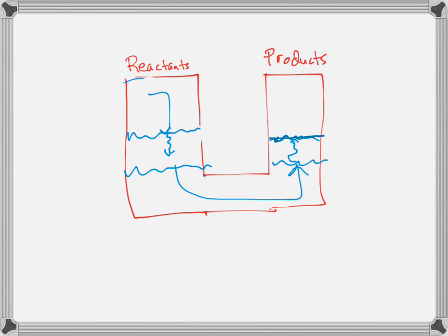What happens if instead of adding reactants, I added more products? I added some stuff to that side. Our water is going to push down a little bit, and this is going to go up — our reactant concentration increases — until we reach yet again a new equilibrium. The constant will stay the same, but our numbers end up changing. The amount of reactants and products are still different, but our constant — the relationship between those — stays the same.